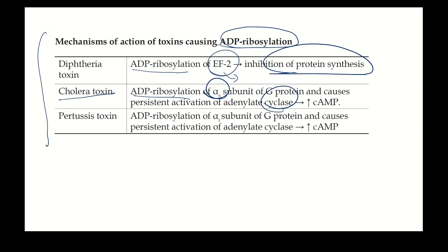The alpha-S subunit has intrinsic GTPase activity that would normally switch itself off. The ADP ribosylation by cholera toxin keeps the switch continuously on, resulting in persistent activation of adenylyl cyclase and continuous production of cyclic AMP.